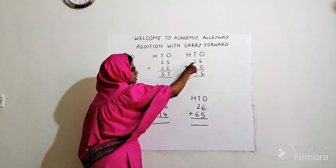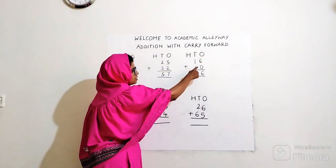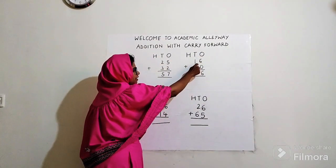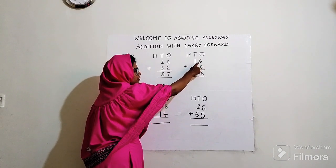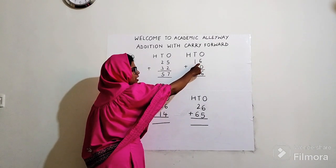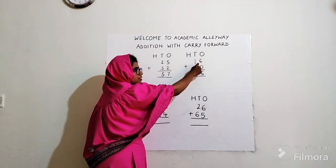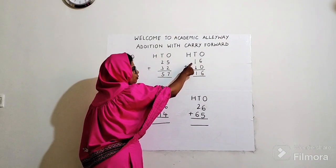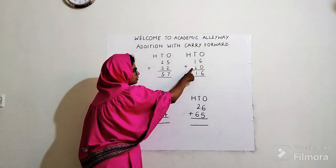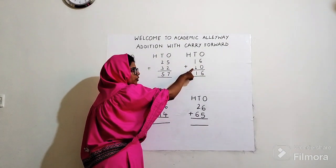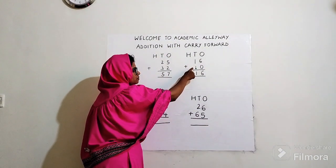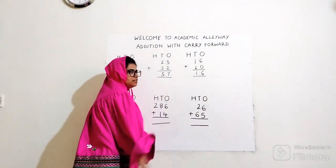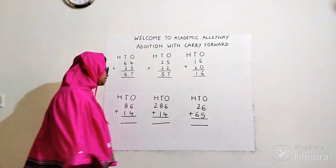Next example. H, T, O. 16 plus 0. Starting with ones: six plus zero. Whenever you add a number with zero, the answer remains the number itself, so six comes down. One plus no number over here, so one comes down as it is. Answer is 16.